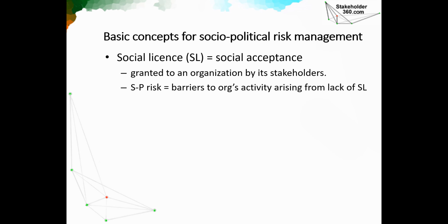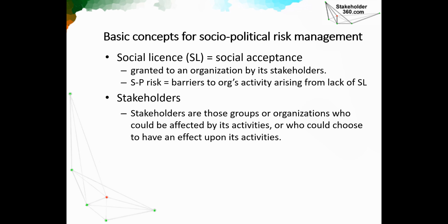Aiming for a solid social license is, in effect, aiming to lower social political risk, because the social license is defined as social acceptance. Social acceptance always occurs in a context — it might be community acceptance, acceptance in terms of general public opinion, or acceptance by the most influential stakeholders. Stakeholders are those groups or organizations who could be affected by the focal organization's activities, or who could choose to have an effect upon its activities. They can self-declare by deciding they're going to have an effect on the focal organization. Therefore, it's a misunderstanding of the concept to say you're going to decide who your organization's stakeholders will be. You can decide to identify them, but they have stakeholder status independently of your recognition of that status. You can decide which ones you want to spend more time engaging with — that's what developing a stakeholder strategy is all about.